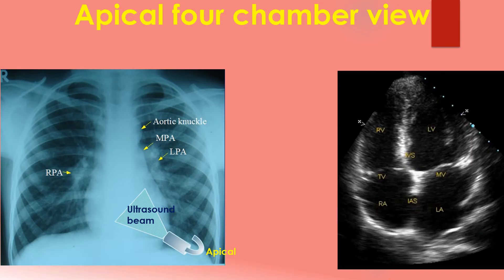Apical views are obtained by keeping the transducer directly over the apex beat. Apical 4-chamber, 2-chamber and 3-chamber views can be obtained by rotating the transducer. The apical 4-chamber view shows all four cardiac chambers, the mitral and tricuspid valves, and the septa. However, as the echo beam is parallel to the interatrial septum, false echo dropouts can occur there. An apical 5-chamber view including the proximal aorta can be obtained by a slight tilting of the transducer.